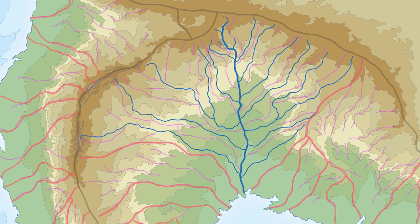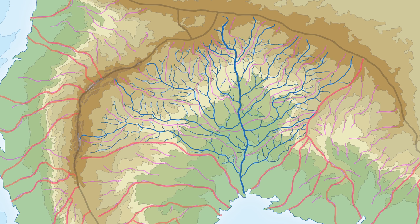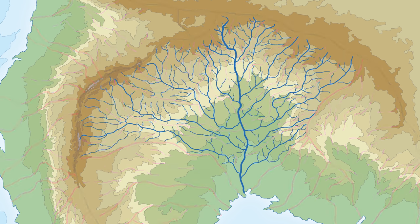Now mark in some tributaries, following the same rules as before. Then some tributaries of your tributaries. So on and so forth, and boom. River map done.